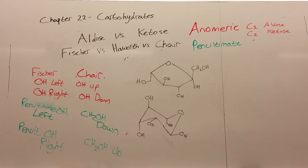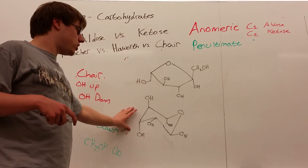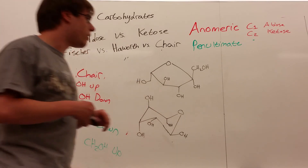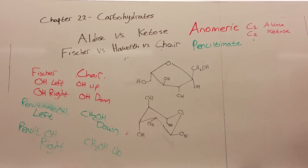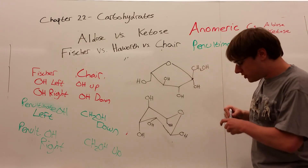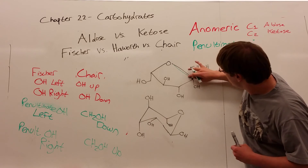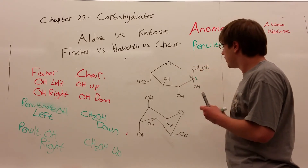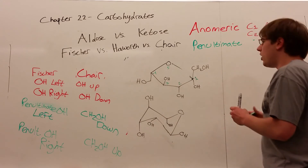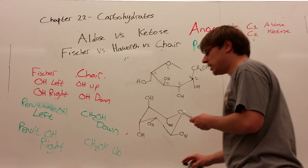Now let's go the other way: turning a Haworth or chair conformation into Fischer projections. If you want to practice on your own, pause the video. Let's start with the ring. First, is this a ketose or an aldose? The anomeric carbon is the one connected to two separate oxygens — the ring oxygen and the OH group — so we can number that carbon 1. Going around: 2, 3, 4, 5, then the oxygen forms the ring, giving six carbons total. I'll draw a six-carbon chain in the Fischer projection.